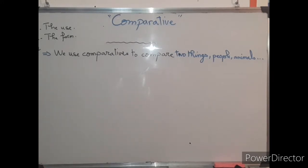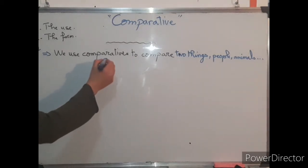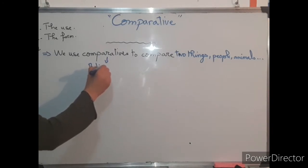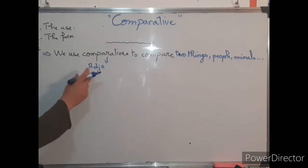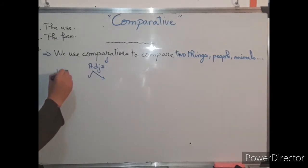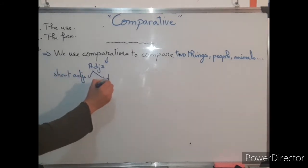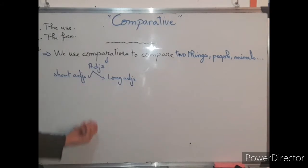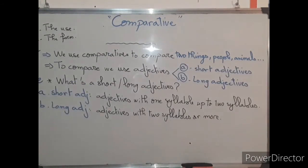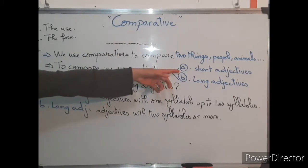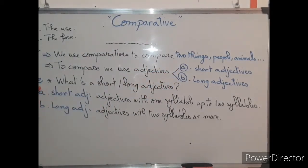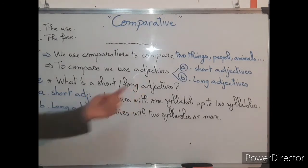When we are talking about comparatives, we use adjectives. We have two types of adjectives: short adjectives and long adjectives. The question is, how can I know whether an adjective is short or long?